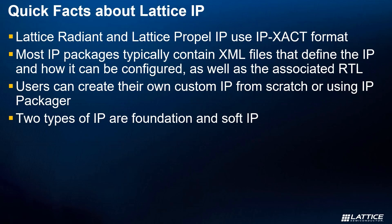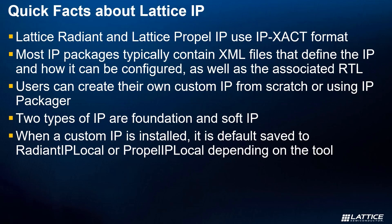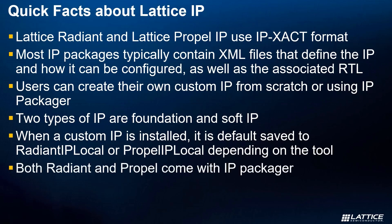The other type are Soft IP, which are either downloaded from the IP server or installed using a custom .ipk IP package file. Whenever a custom IP is installed to either Radiant or Propel, it will be installed to the active IP installation directory — called Radiant IP local for Radiant or Propel IP local for Propel. These directories are automatically generated when each tool is installed, or can be created later on by users. To check or modify your IP installation directory mapping, refer to the directory mapping tool setting for each respective software tool.